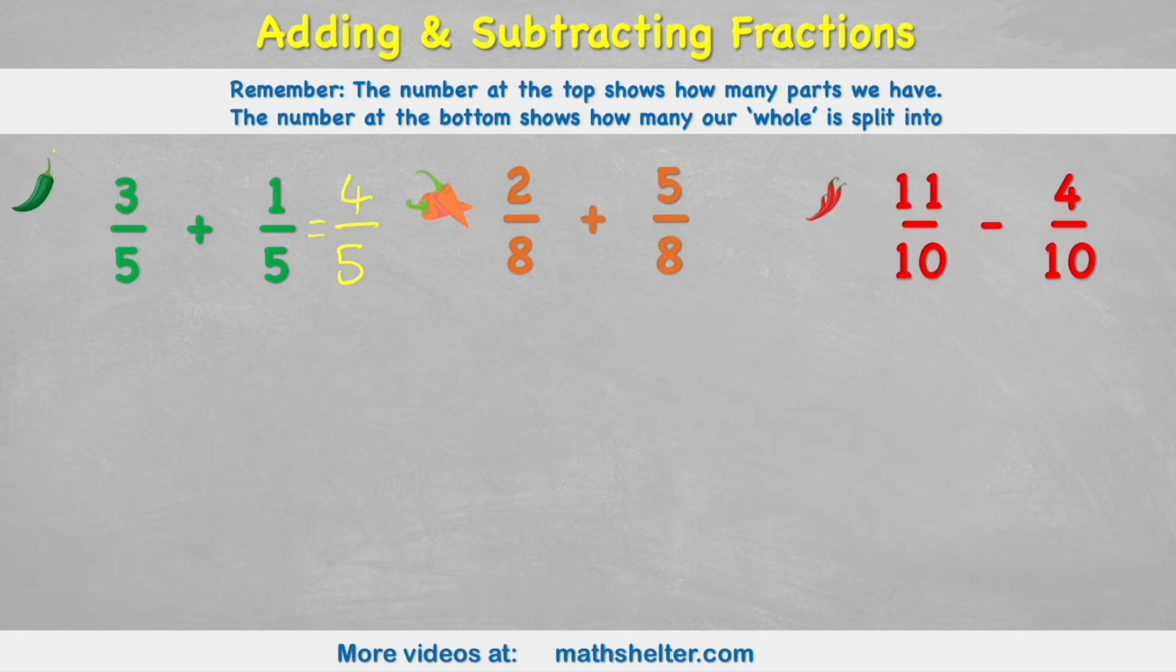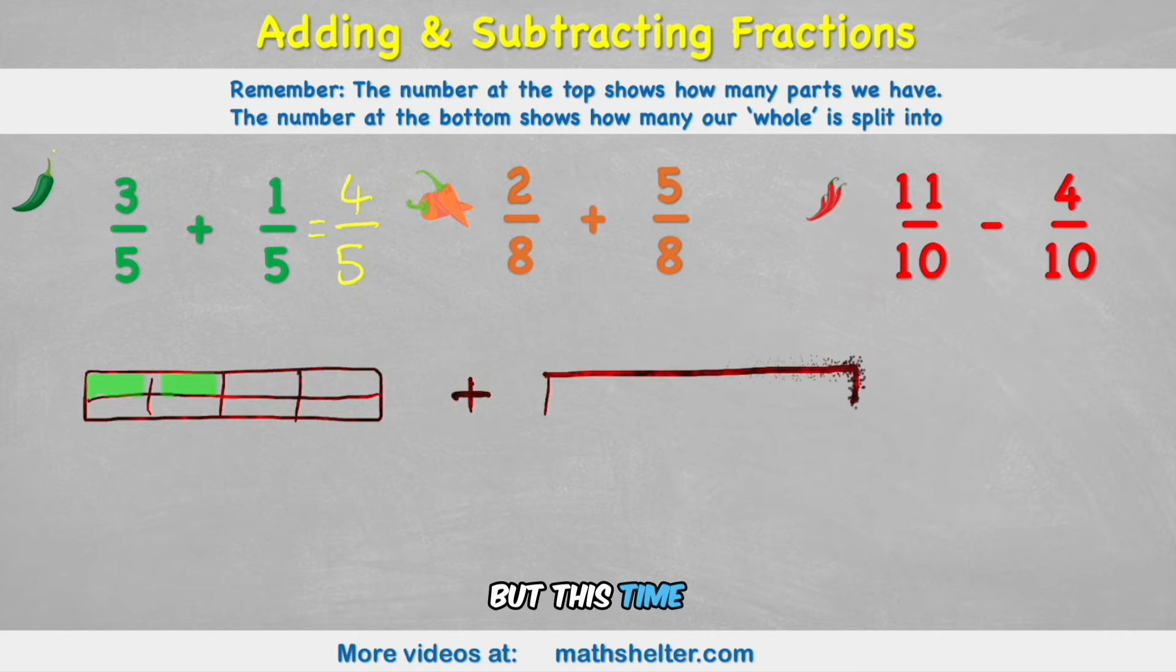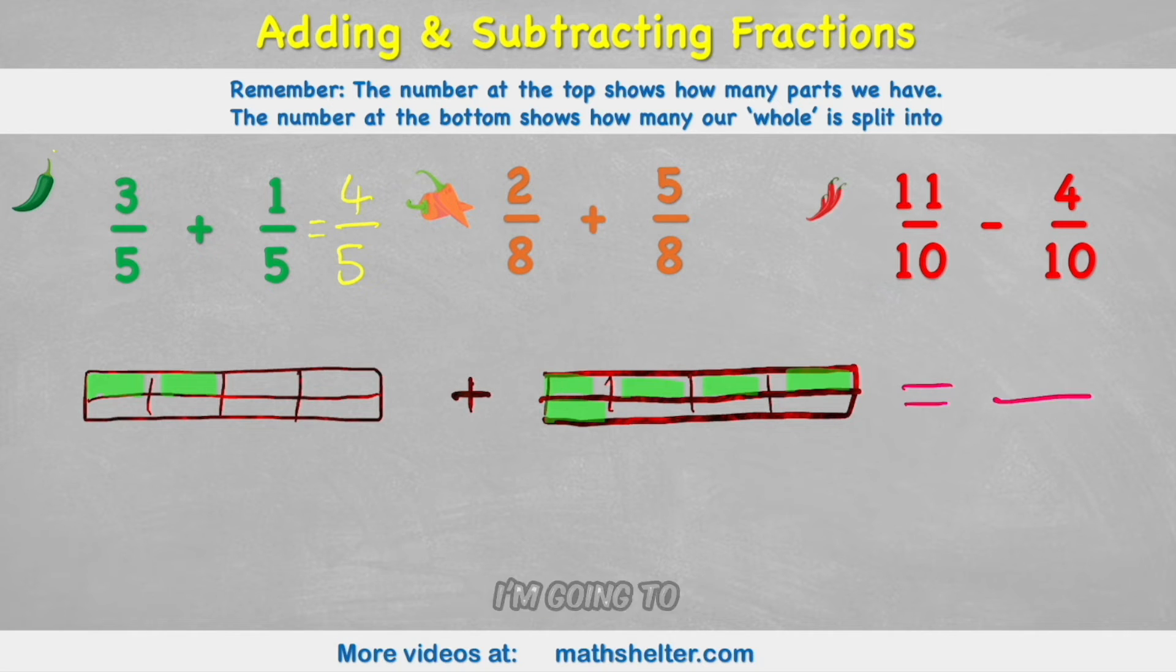Let's look at our second example. This time I have 2 eighths added to 5 eighths. So it's like saying I have a chocolate bar that this time is split into eighths. So it would look a little bit like this. And I have 1, 2 of them. And I'm adding it to another chocolate bar. But this time I have 5 of my eighths. So I start with my eighths and I'm going to shade in 5. 1, 2, 3, 4, and 5. And just like before, if I'm adding eighths together, I'm going to end up with eighths in the end. And how many eighths do I have? Well, I have 1, 2, 3, 4, 5, 6, 7.